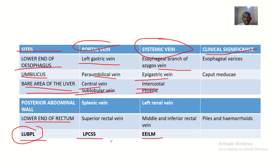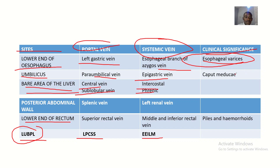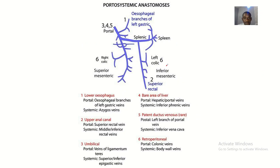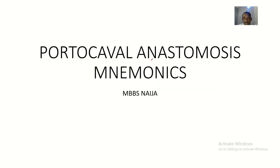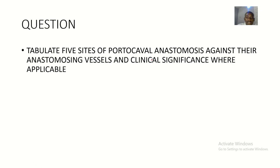For clinical significance: the veins around the lower end of esophagus can become inflamed, causing esophageal varices. Around the umbilicus, you can have caput medusae. At the lower end of rectum, you can have piles and hemorrhoids. These mnemonics will help you work through portocaval anastomosis efficiently.